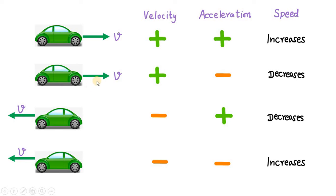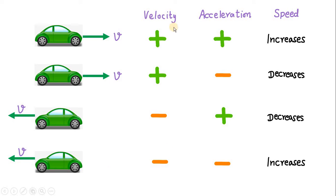Velocity is a vector. A vector has a direction, and in one-dimensional motion we have only two directions — either rightwards or leftwards. So you can use only two symbols, plus and minus, to represent the direction. Let us suppose the rightward direction is positive and the leftward direction is negative. Hence, we have these signs associated with the velocity.